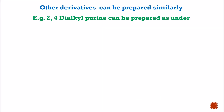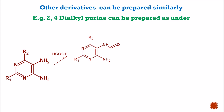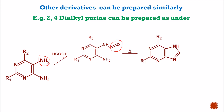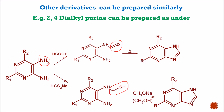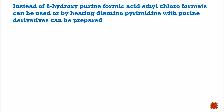Other derivatives of purines can be prepared similarly, where R1 and R2 are the groups for derivatization. In the presence of formic acid, the NH2 group at position 5 is converted into an NHCHO group. After heating, a ring structure forms and one molecule of water is liberated. Another method involves reaction in the presence of HCS2Na, where a CHSH group is formed. After reaction in the presence of CH3ONa, ring closure takes place and another derivative of the purine structure is formed. Reaction with ethyl chloroformate on the diaminopyrimidine gives a hydroxyl group at the eighth position.